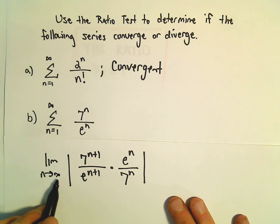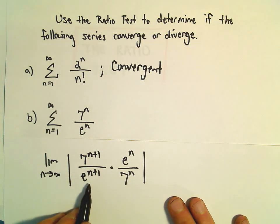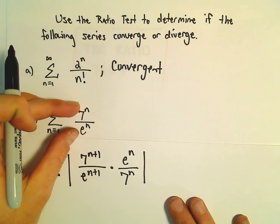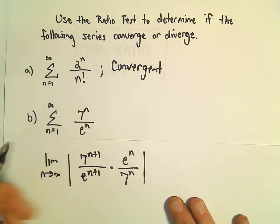So we'll have the limit as n goes to infinity. 7 to the n plus 1 over e to the n plus 1. Then again, I'm just taking my original, flipping it.